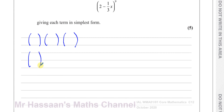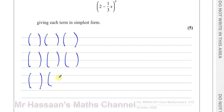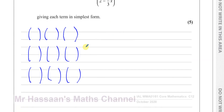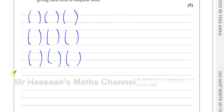This is for the first term, this is for the second term, this is for the third term. They wanted four terms — the first four — so this is for the fourth term.